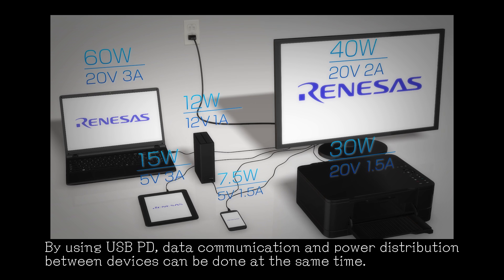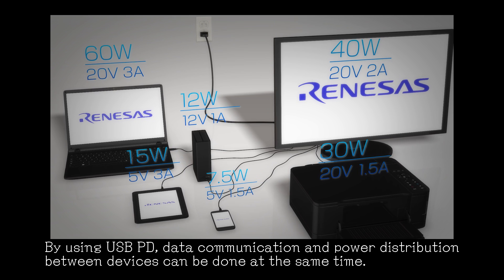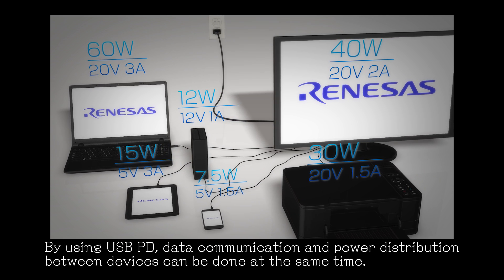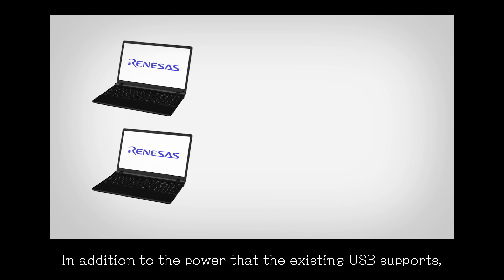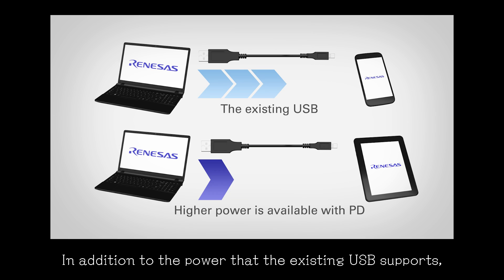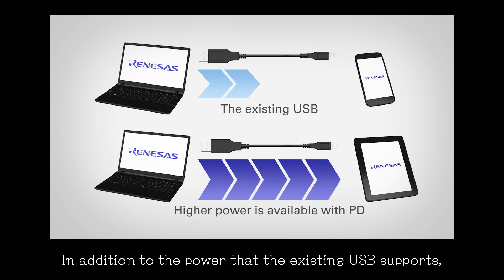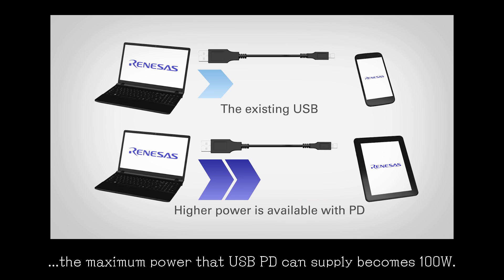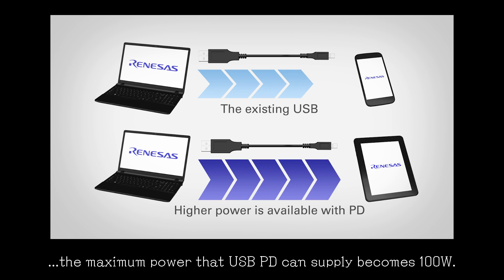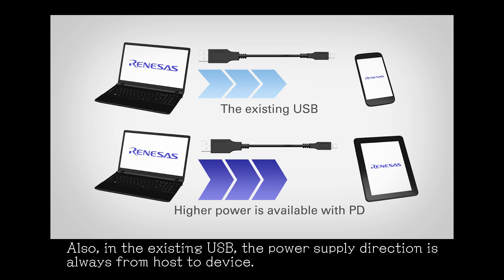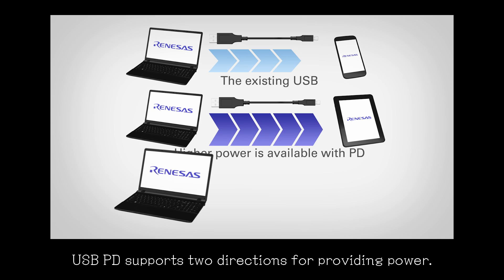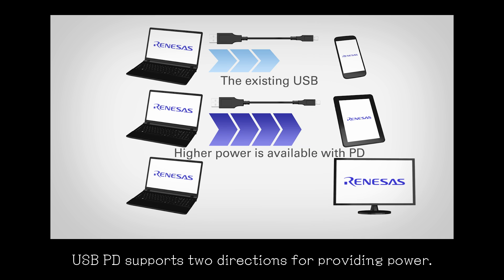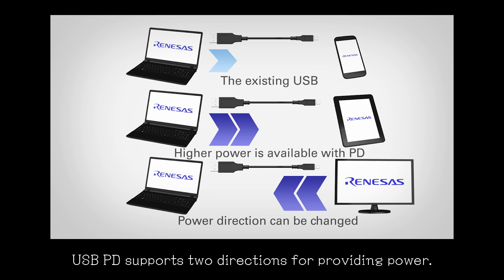By using USB PD, data communication and power distribution between devices can be done at the same time. In addition to the power that the existing USB supports, the maximum power that USB PD can supply becomes 100 watts. Also, in the existing USB, the power supply direction is always from host to device, but USB PD supports two directions for providing power.